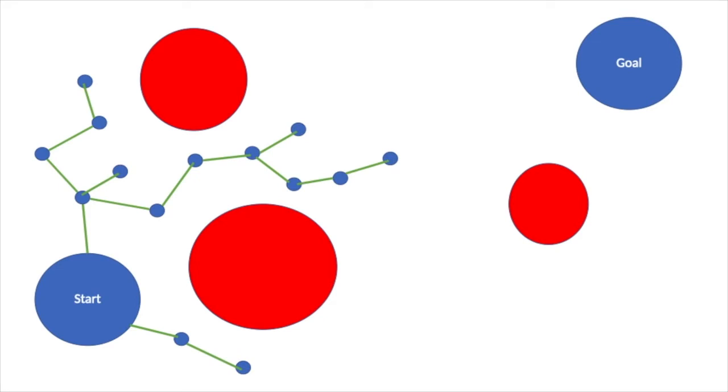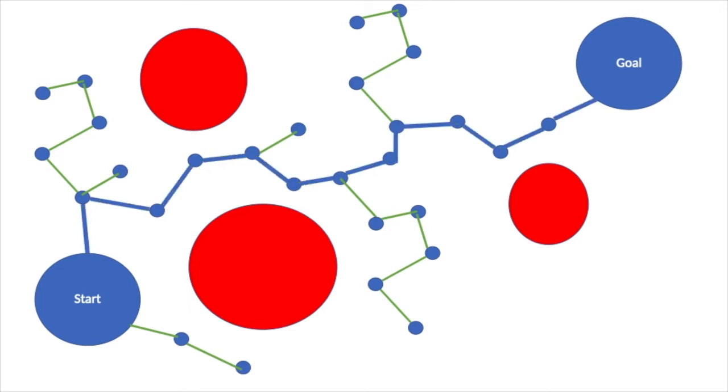Occasionally instead of choosing a random point within the graph we choose the goal node itself in order to increase the chances of finding it. Once the tree reaches the goal node we can return the path from the start node to the goal node.